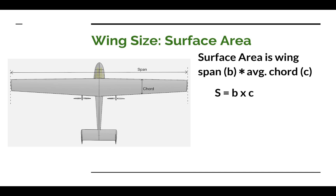Imagine a boat sitting in the water. All of the surface of the boat touched by the water is the wetted area. In an airplane, all of the surface touched by the moving air is the wetted area. For our wing size, wetted area is not what we're talking about. So let's talk a little bit more about what surface area is in the design process.